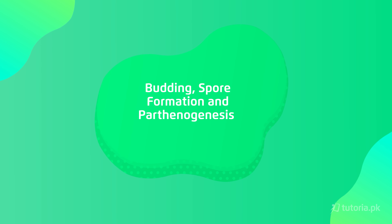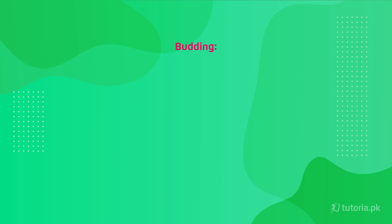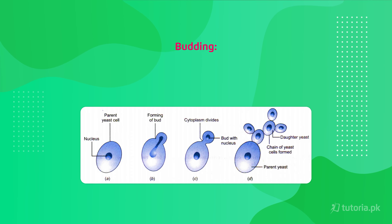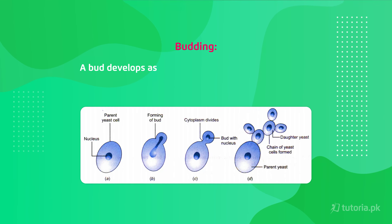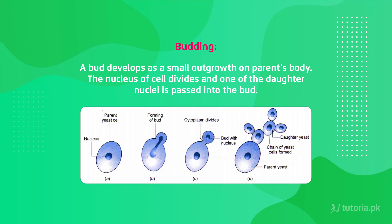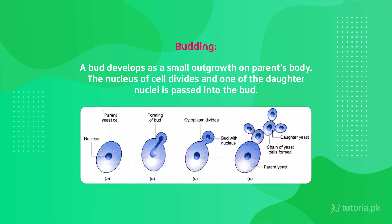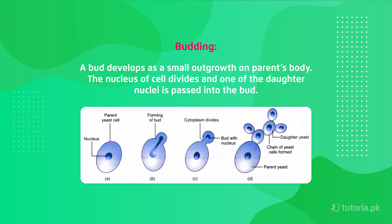First of all, we have budding. What is budding? In precise terms, a bud develops as a small outgrowth on the parent's body. The nucleus of the cell divides and one of the daughter nuclei is passed into the bud.